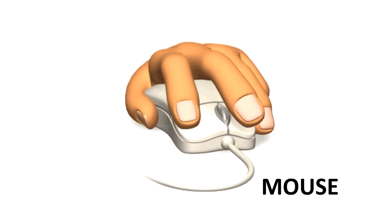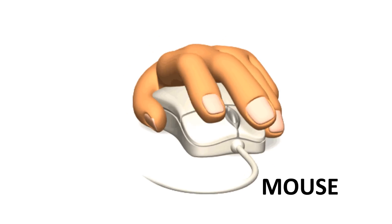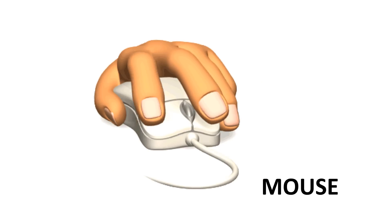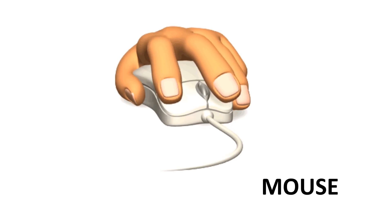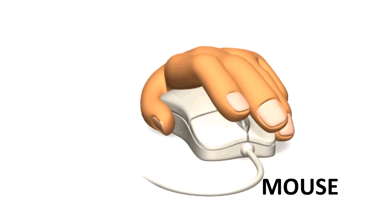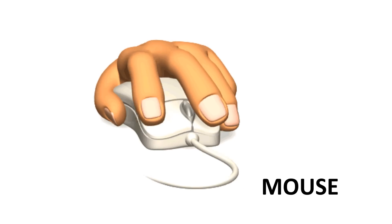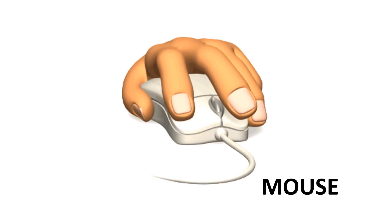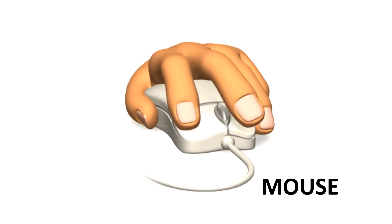Mouse is another essential input device used to interact with the computer. Mouse has two buttons, left and right, and a scroll wheel. Clicks with the mouse are the most fundamental piece of information sent to the CPU.